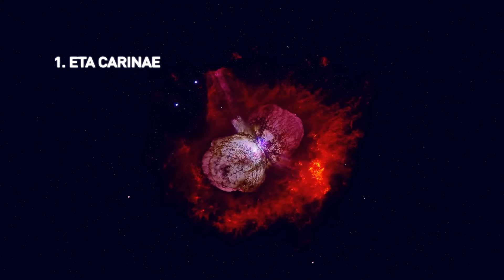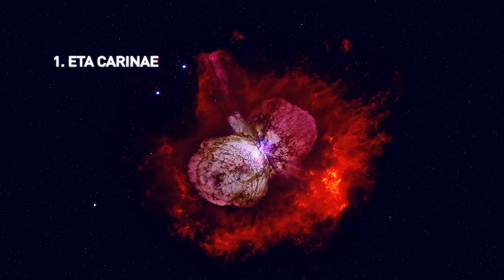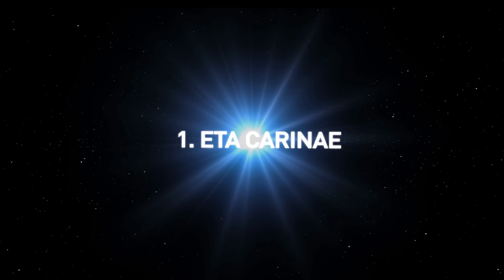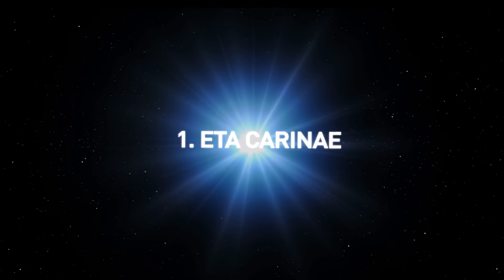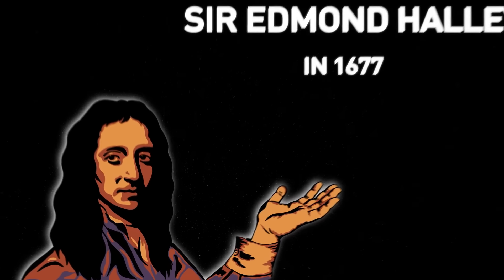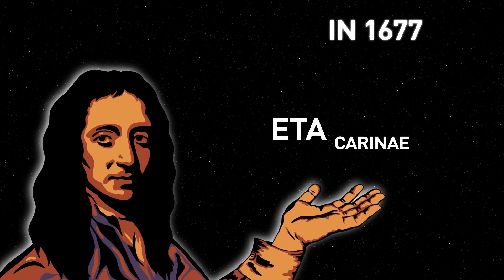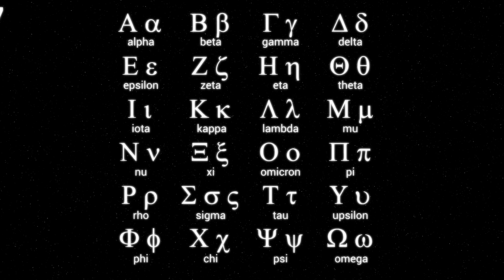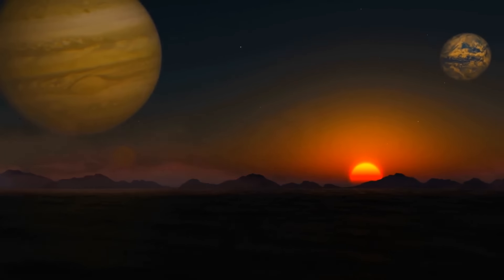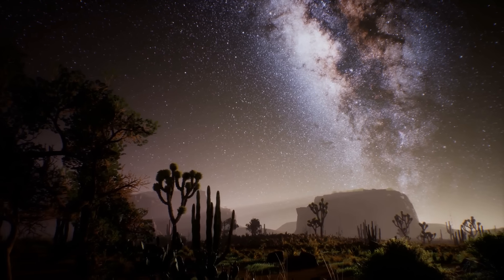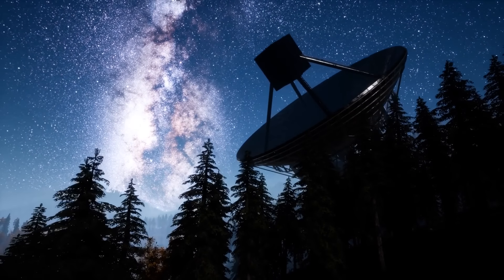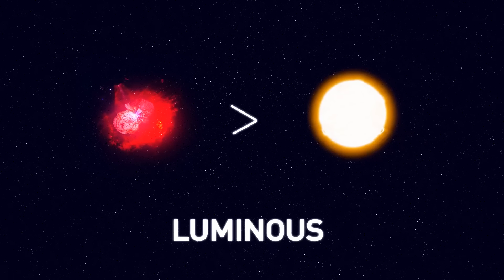At the top of the list must be the southern hemisphere star, Eta Carinae. Greek letters before the name of the constellation indicate the rank of the star's brightness in that constellation. Sir Edmund Halley, in 1677, recorded Eta Carinae as the seventh brightest star in the constellation Carina, Eta being the seventh letter in the Greek alphabet. It might not have looked very bright to Sir Edmund and his contemporaries in the 17th century.